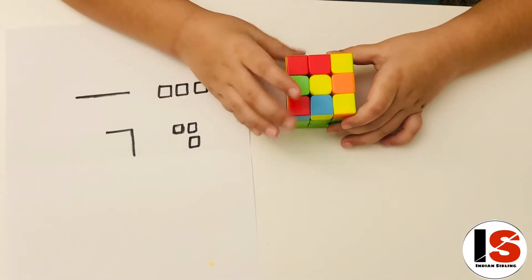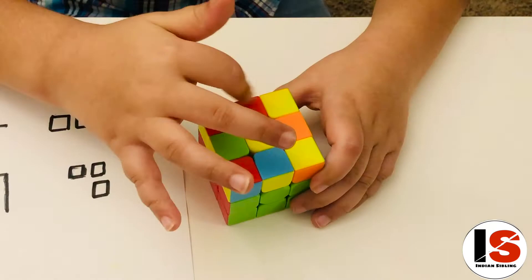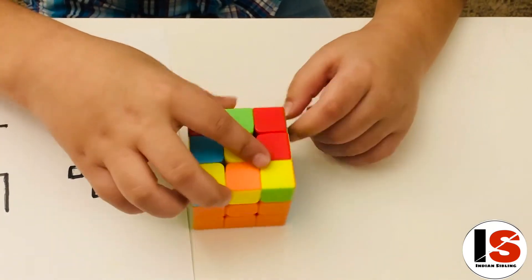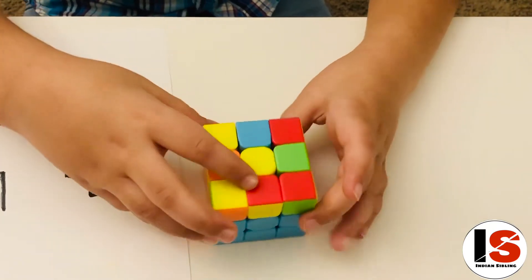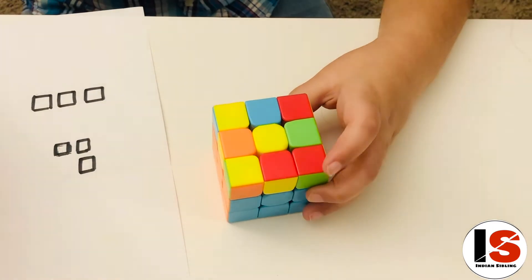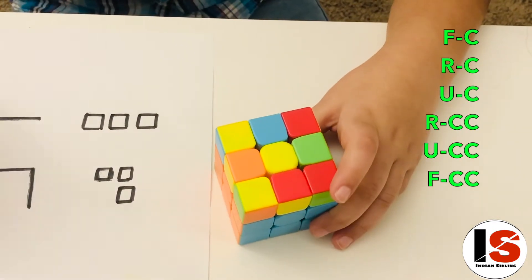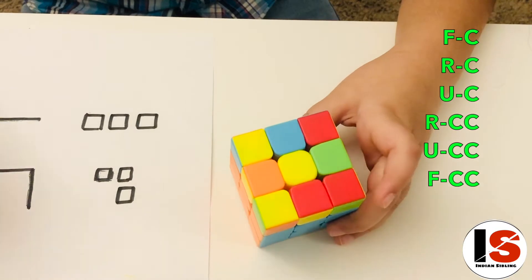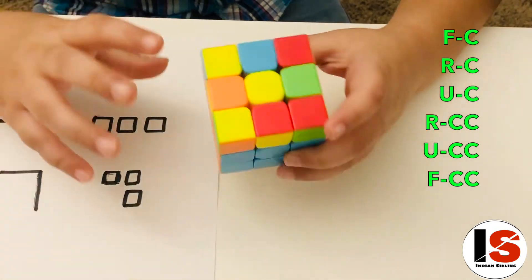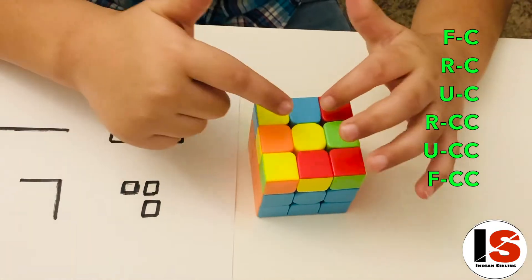The most important thing of solving the third layer is your position. Then, to solve the cross with the centerpiece aligned, the algorithm is F-R-U R-U-F. F-R-U are clockwise and R-U-F is anti-clockwise. Now let's do it.